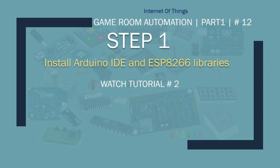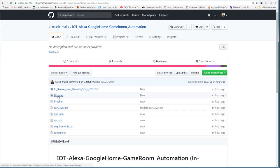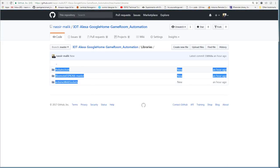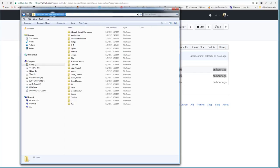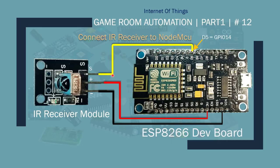Step 1 is to install Arduino IDE and ESP8266 libraries — you can watch my earlier tutorial. Step 2, you need to copy the folders to your Arduino libraries. Go to my GitHub project and under the libraries folder, copy these three folders to wherever you have your Arduino installed, under Libraries. Step 3: connect the IR receiver to NodeMCU. The S wire goes into D5, which is GPIO 14 on NodeMCU. Positive connects to any 3V pin on the board, and negative goes to any ground pin.